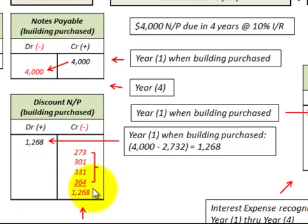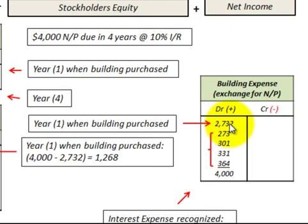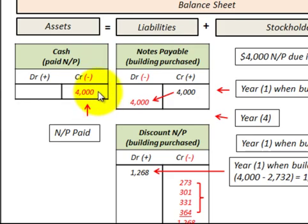The associated debit entry is to the building expense for the interest expense incurred each of the four years. When we purchased the building at the beginning of year one, we recorded the present value of the notes payable as an expense item, and then added the interest expense for each year to arrive at a $4,000 net value — which is what we paid on our notes payable. At the end of the fourth year, we debit notes payable to reduce the balance to zero, and credit cash for the $4,000 payment. That's how you record a discount on a notes payable.